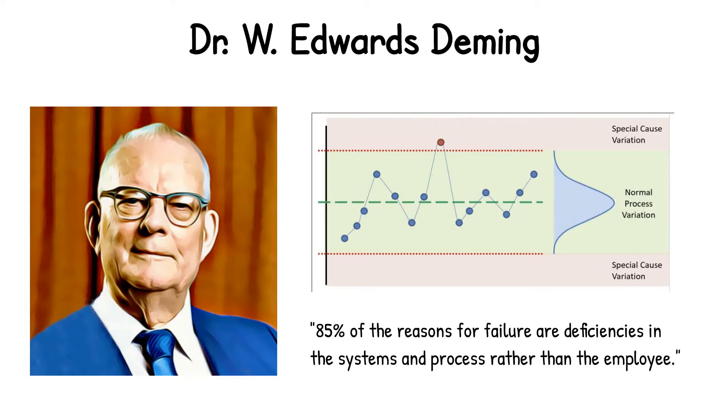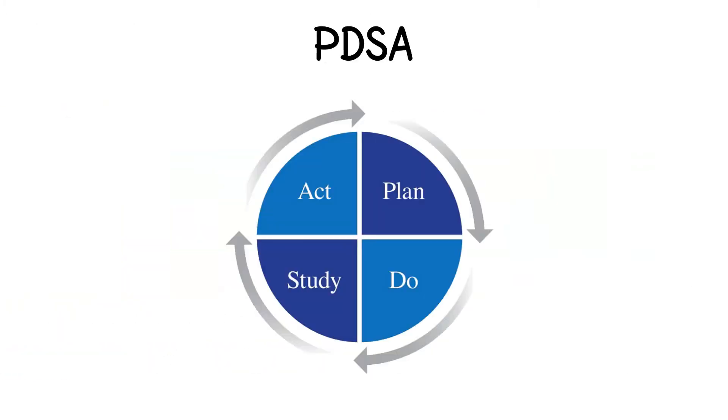Deming, along with the physicist Walter Schiwart, created the Plan-Do-Study-Act cycle, which provides a basic structure for carrying out a performance improvement project. The PDSA cycle is used as the basis for planning and directing performance improvement efforts. The cycle is broken into four stages, starting with plan.